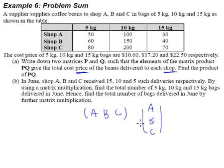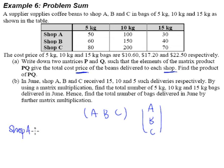Now, how are we going to get that? This is where the trick comes in. This question, if not framed as a matrix question, is very easy — even a 5-year-old kid can do this. Because you're only interested in each shop getting how much worth of beans. So shop A gets 50 bags of 5kg, and 5kg costs $10.60 each bag. So for shop A, the price will be 50 multiplied by 10.60.